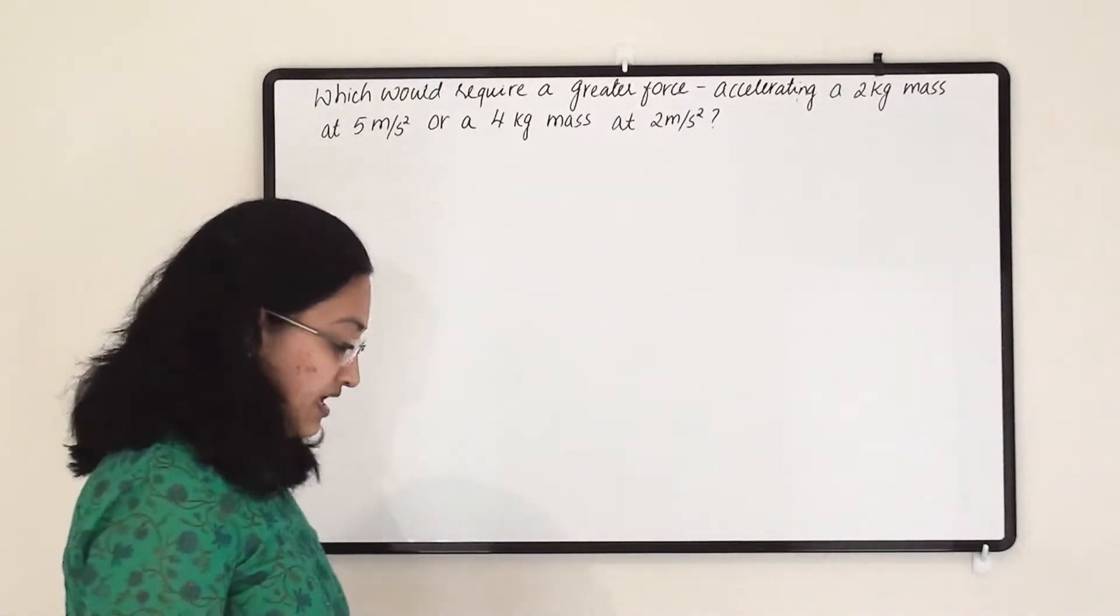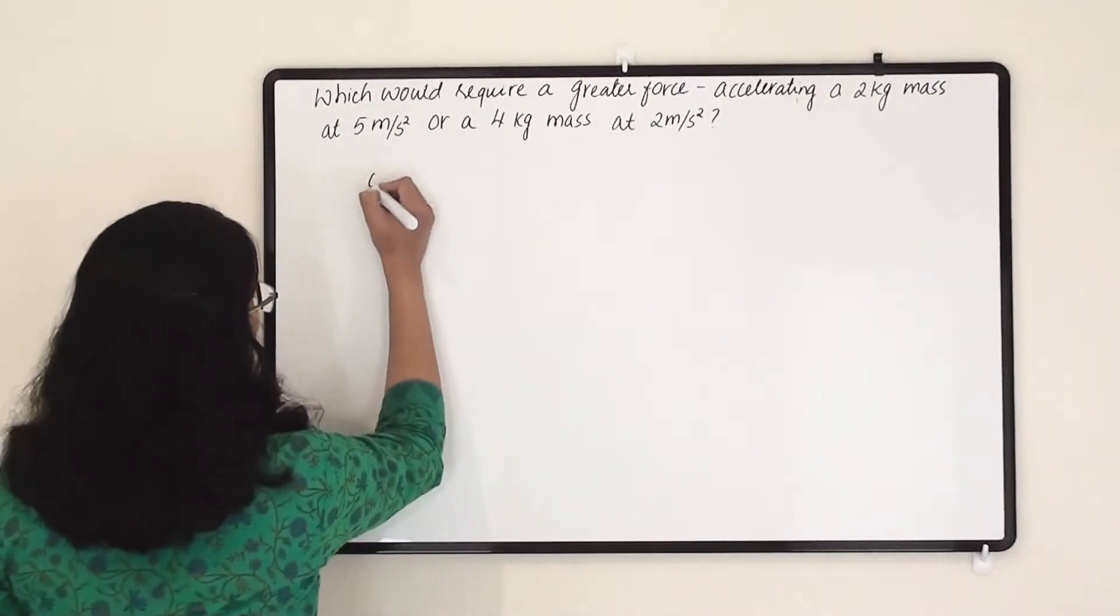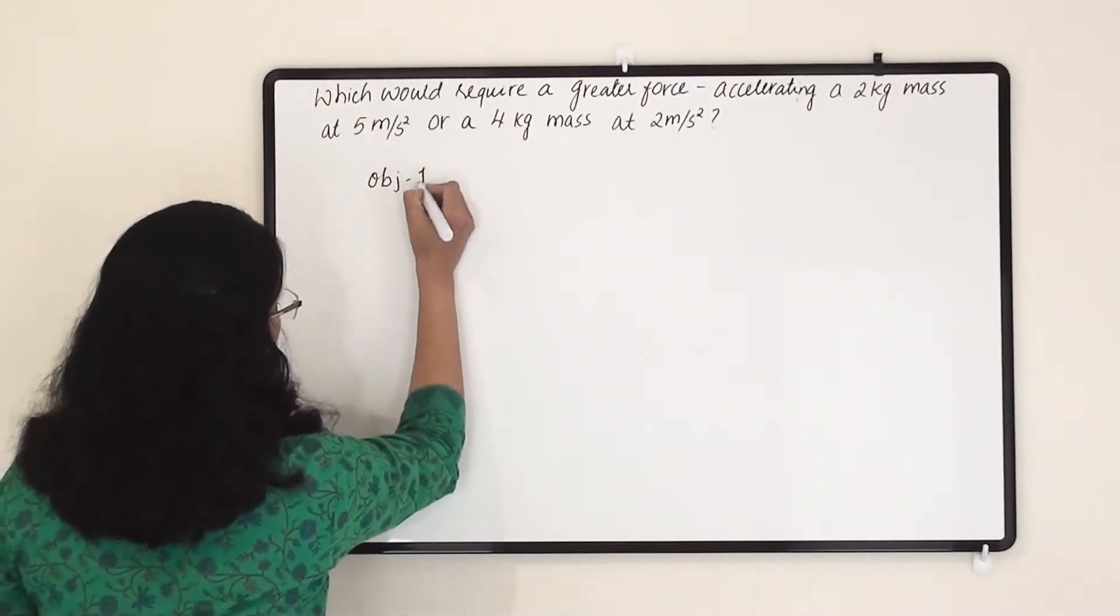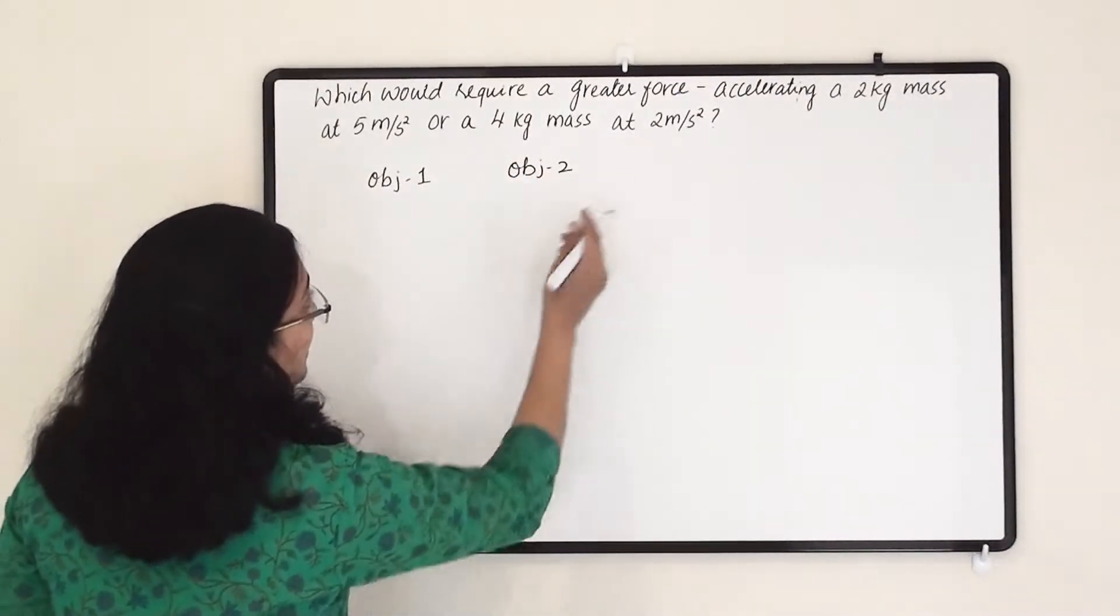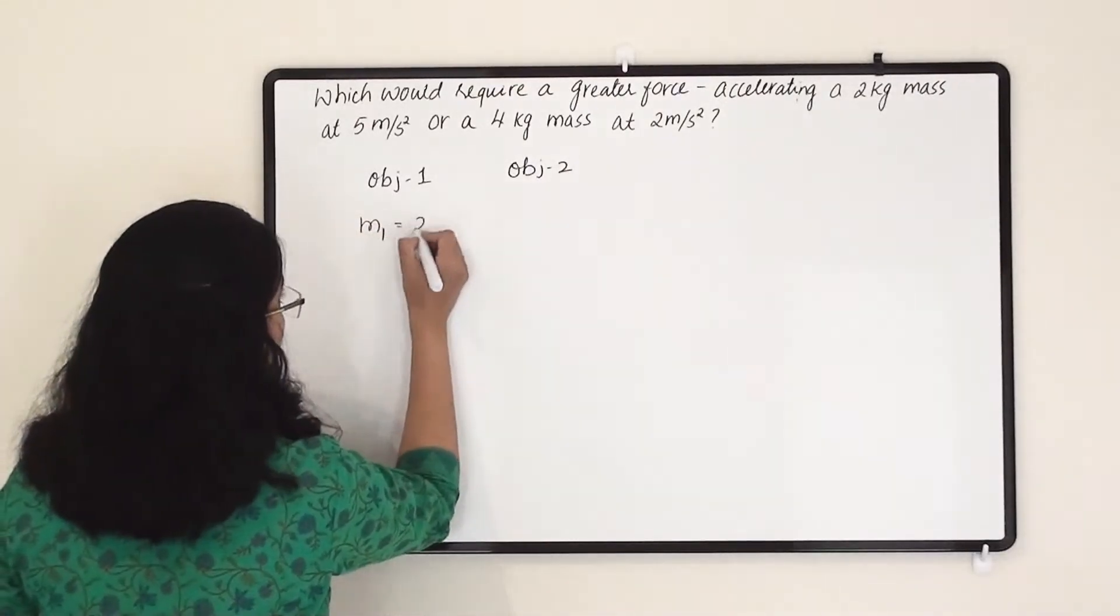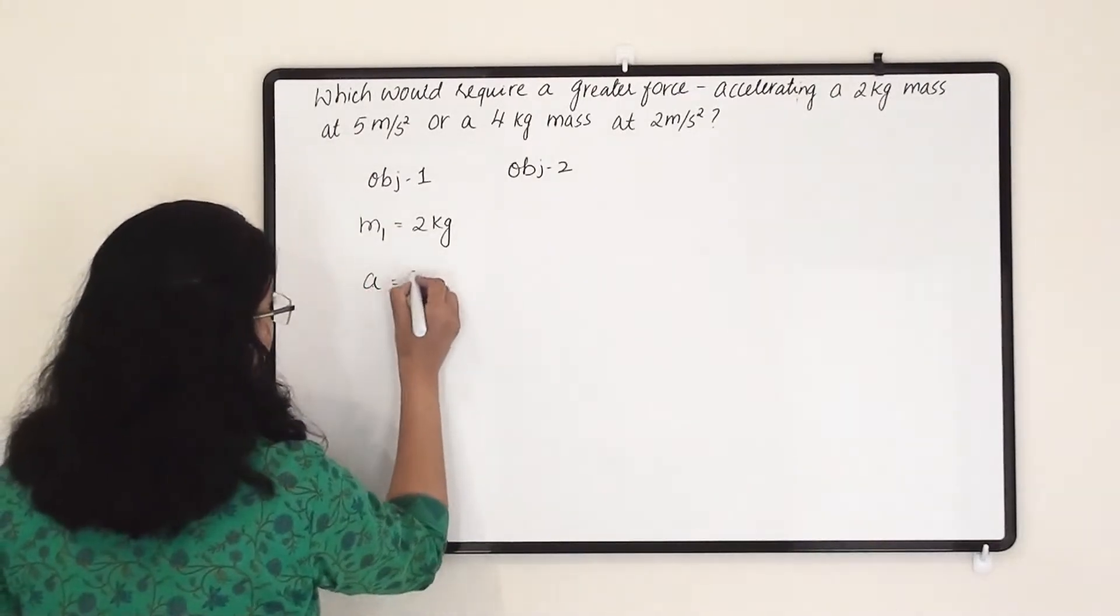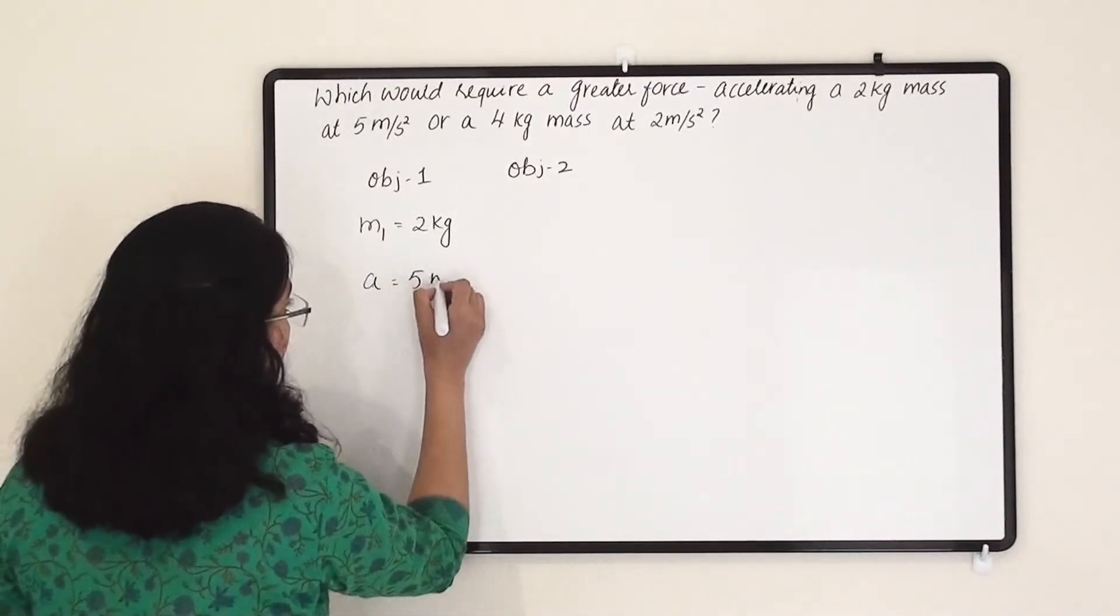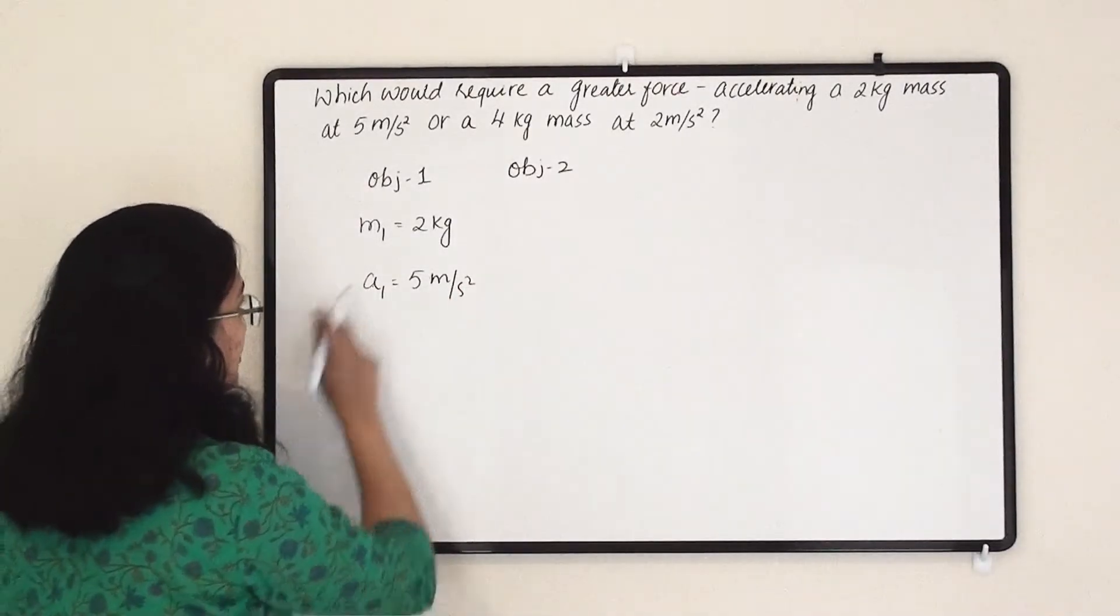So they have given us these details for object 1 and object 2. There are two objects, and accelerating 2 kg mass. So here m1 is 2 kg at 5 meter per second. So the acceleration we need here is 5 meter per second square. That is a1 for this object.